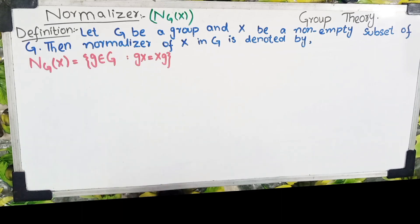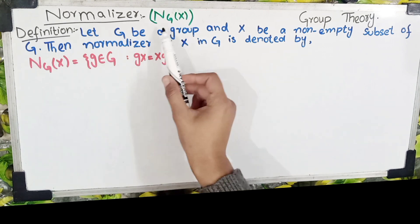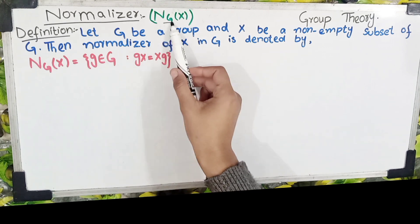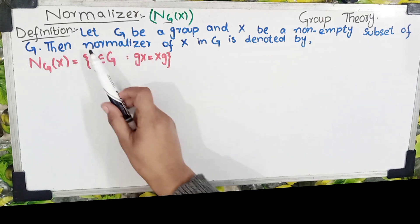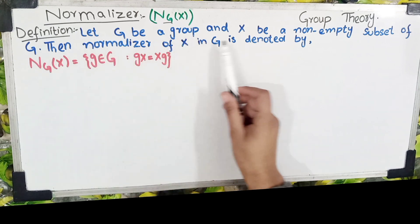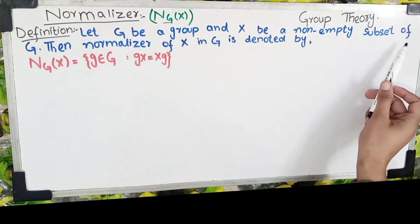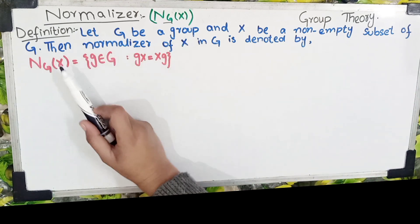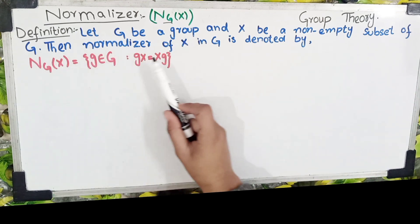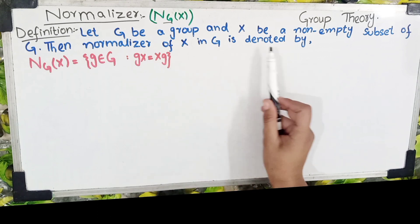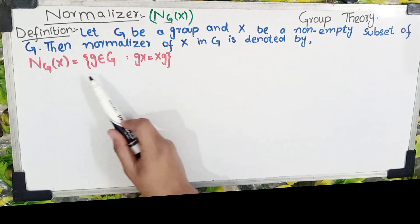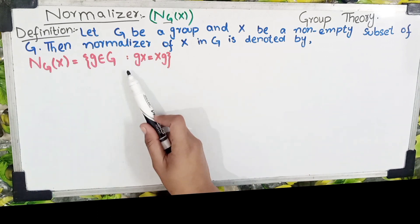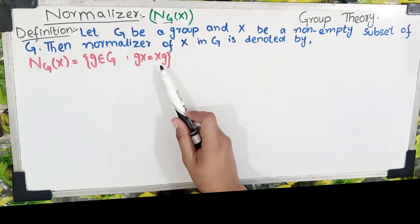We will discuss the normalizer in group theory today. We denote the normalizer as N_G(X). Let G be a group and X be a non-empty subset of G. Then the normalizer of X in G is denoted by N_G(X) = {g ∈ G : gX = Xg}.